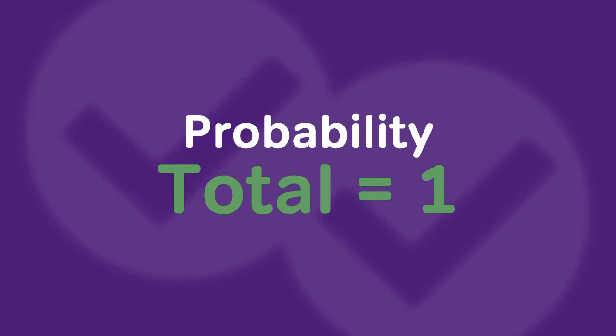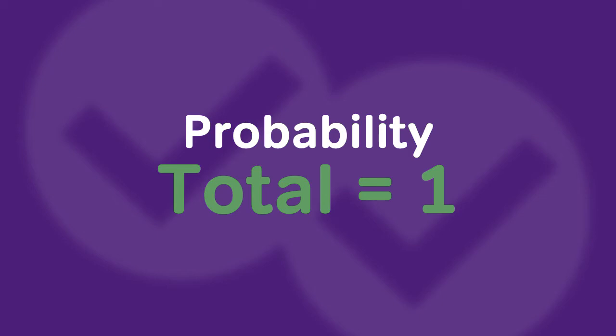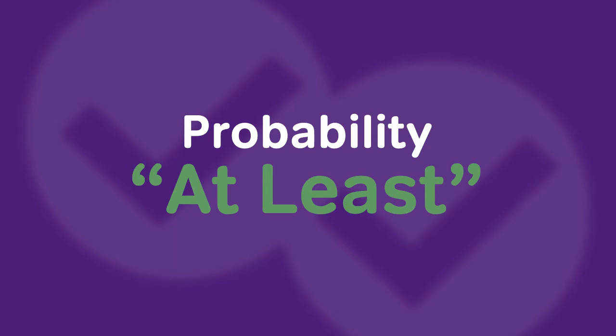This tip applies to probability, permutations, and combinations, but let's start by discussing how it applies to probability. Not only does this appear more frequently in probability questions, there are also a couple of things that make it a little bit easier. The first thing is that the total probability is always 1, or 100%, so we don't need to solve for that separately. The second part is that there is often a clue in the question — the phrase 'at least.' If we see the words 'at least' in a probability question, that is a huge hint that we should be using this trick.